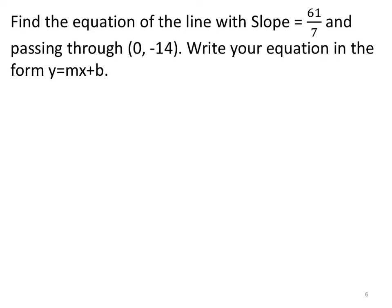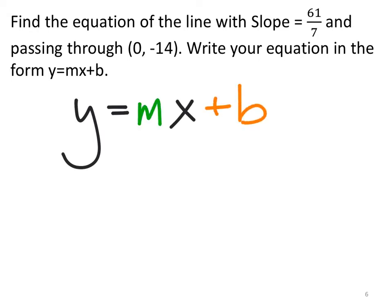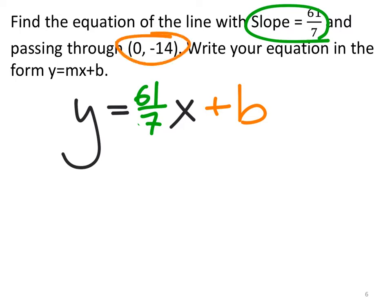Same thing here: slope is 61 over 7, and it passes through (0, negative 14). We write y equals mx plus b, replace m with 61/7, and since the y-intercept point is (0, negative 14), we just write minus 14. The key is knowing the x-value is 0, which tells us it's the y-intercept. If the x-value were not 0, we'd have to use a different method to find the y-intercept.